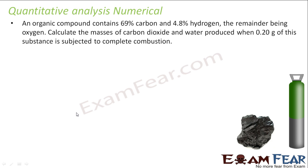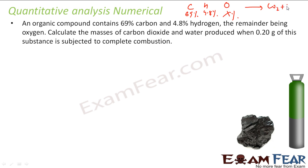Let's take one more example. We have an organic compound which has 69% carbon, 4.8% hydrogen, and the remainder is oxygen. We have to find the mass of carbon dioxide produced and water produced when 2g of this substance is subjected to combustion.